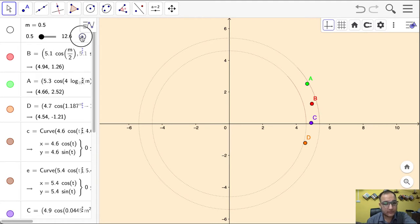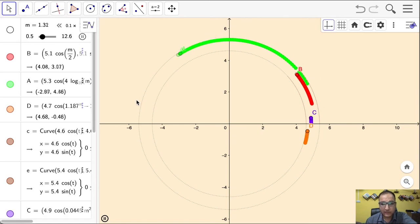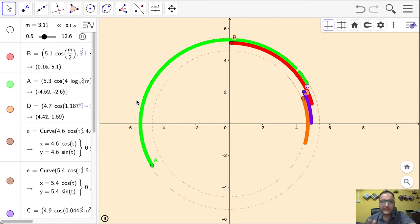Let me play this. You can see A is moving really fast. B, C and D are very slow. And we can observe A is slowing down somehow. And C and D are increasing their speeds.